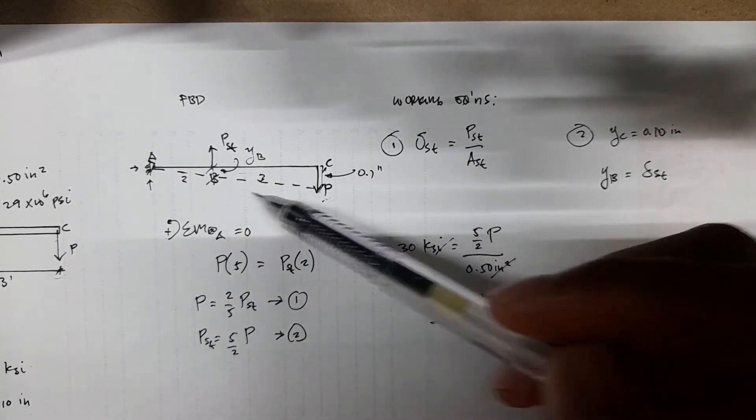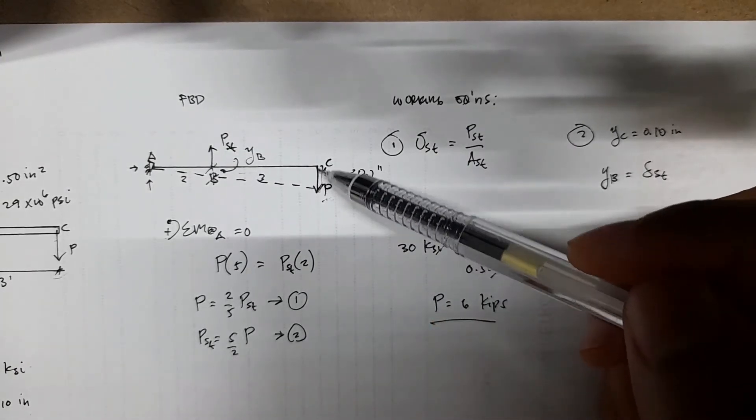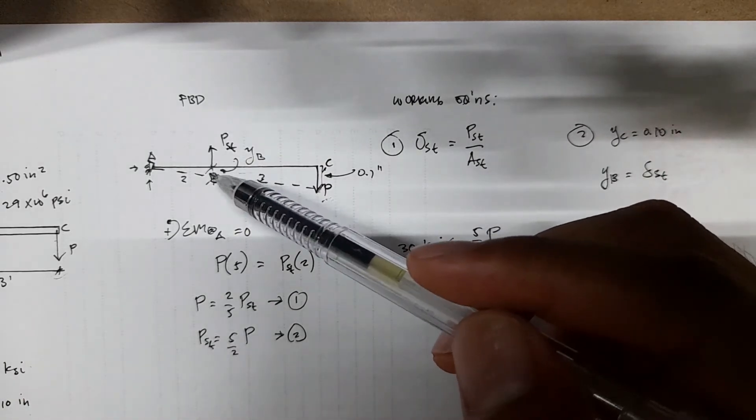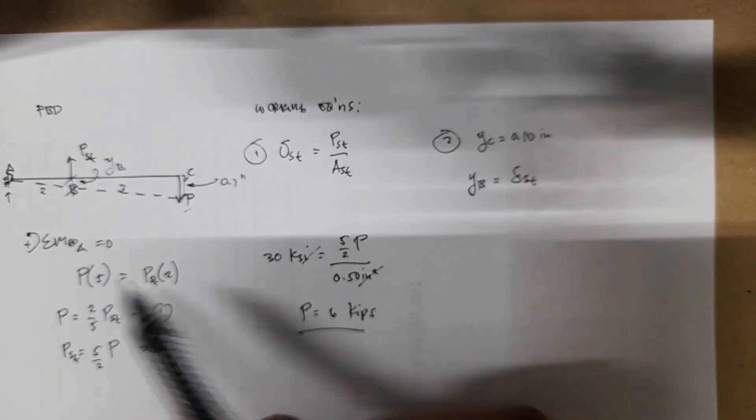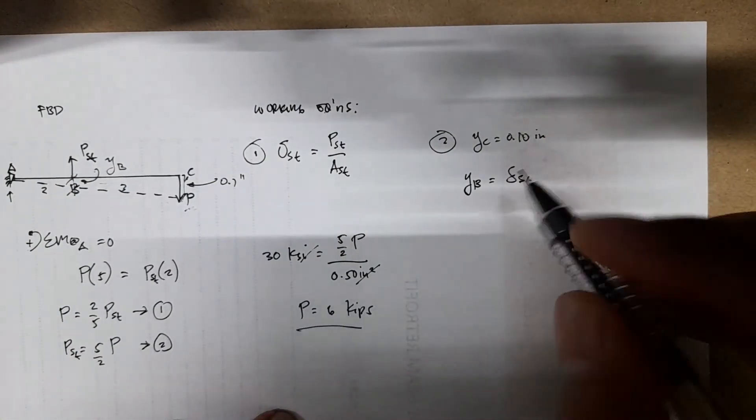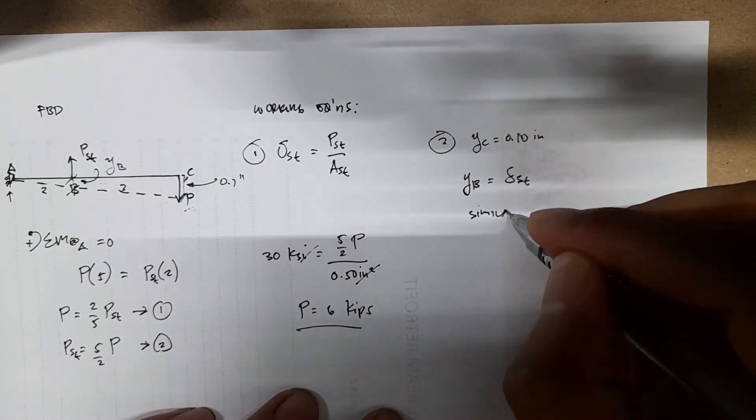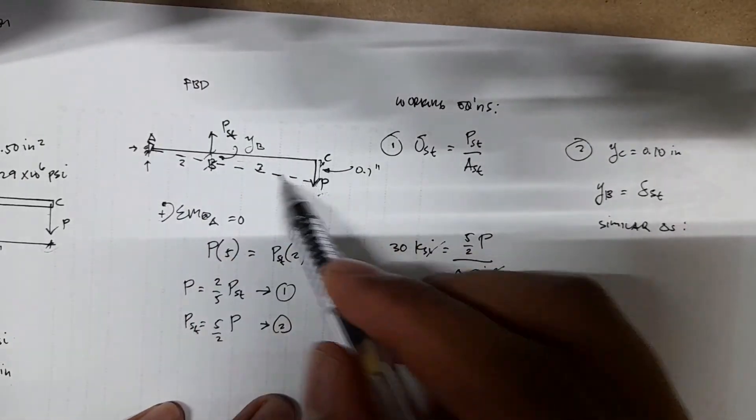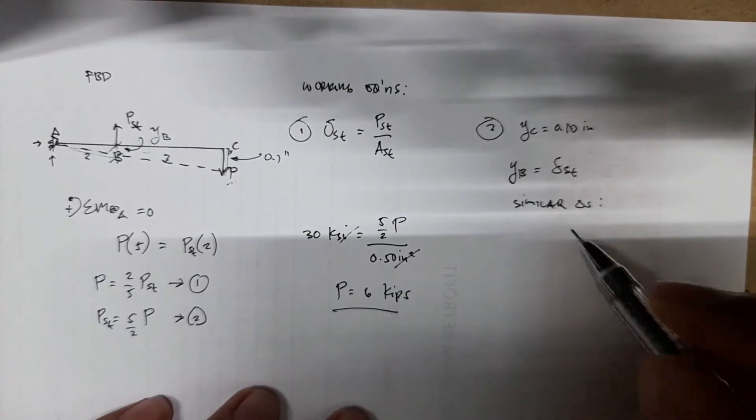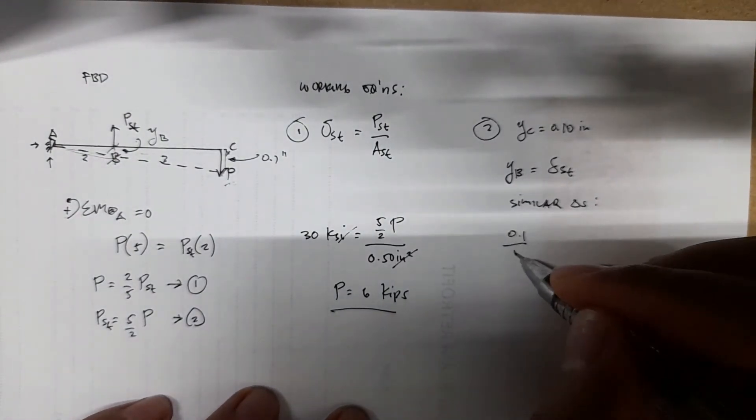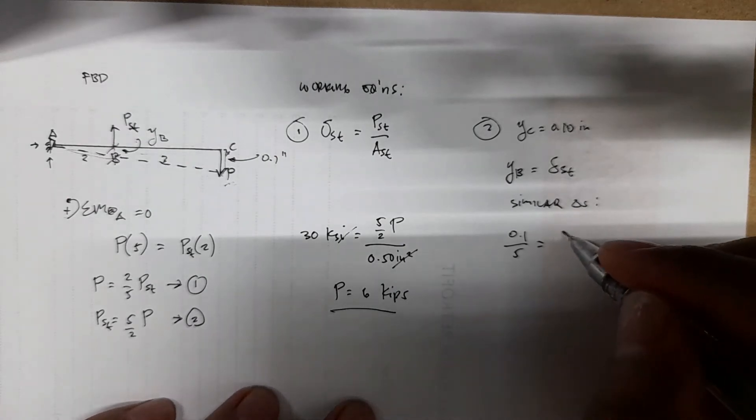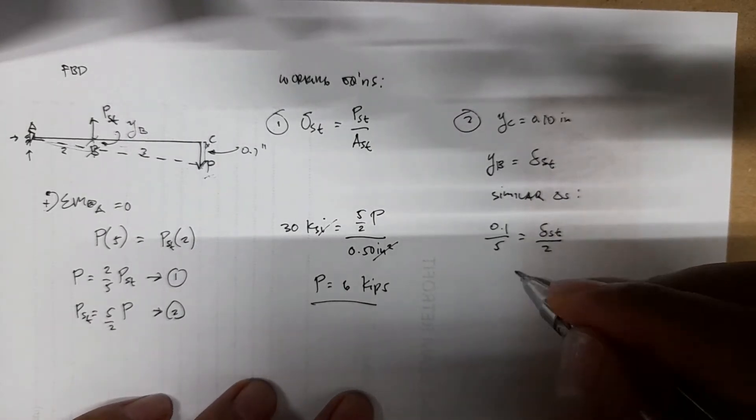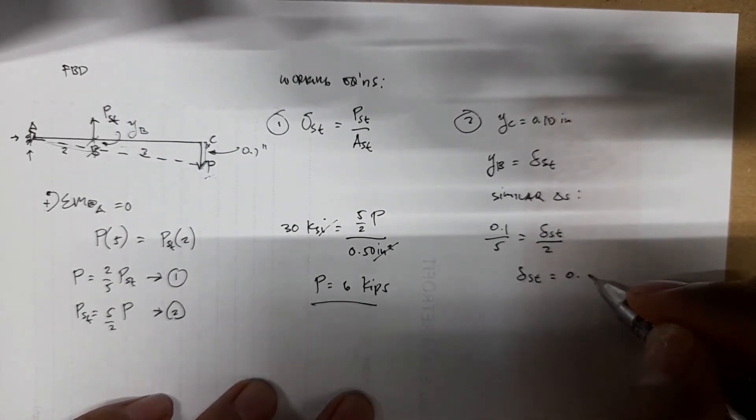As P moves here with downward movement for point C, this was also moving to accommodate the movement at point C. Because the steel also deforms due to the presence of P, using similar triangles, you have two triangles, the bigger one and smaller one. You have 0.1 divided by 5 equals YB divided by 2. So you'll have YB equals 0.04 inches.